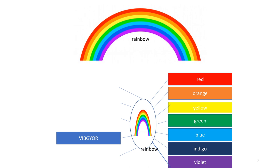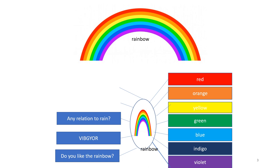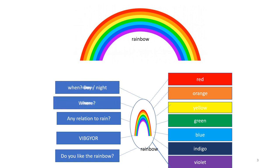All these colors we can easily remember by using the word VIBGYOR. Do you like the rainbow? Quite naturally, every child says yes. Is there any relation to rain? It looks like a bow. It appears before or after the rain. Where can you see it? Generally, we see it in the sky. When do you see it — daytime or nighttime? Quite naturally, we see it in the day. This is how we draw a mind map.